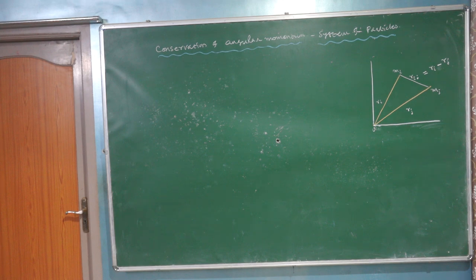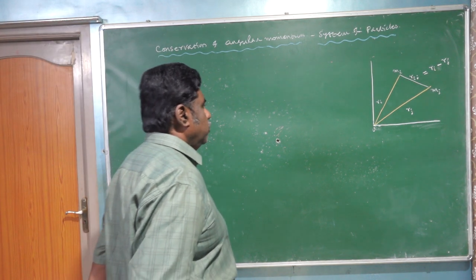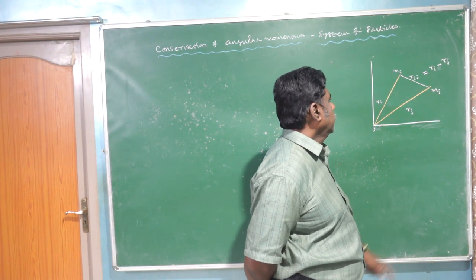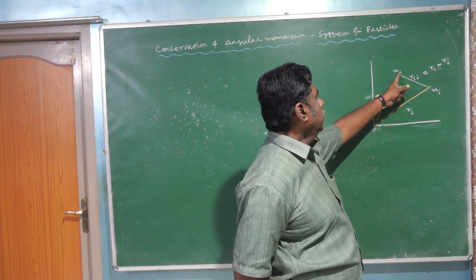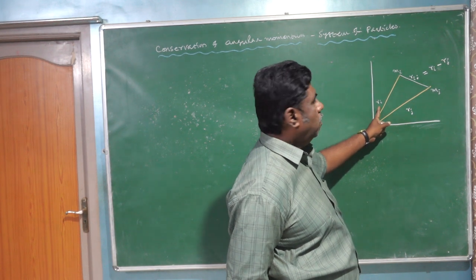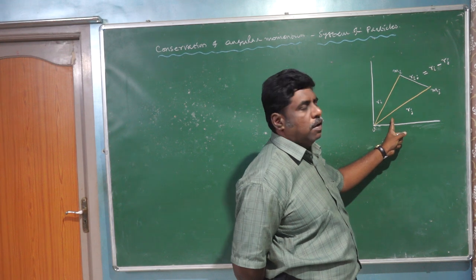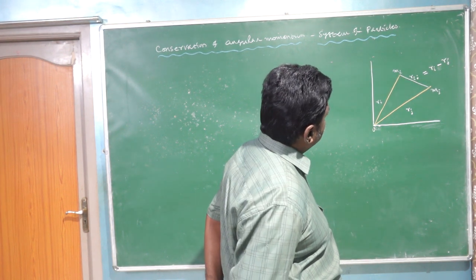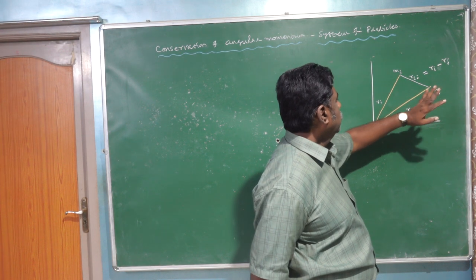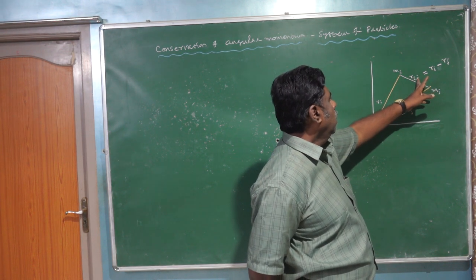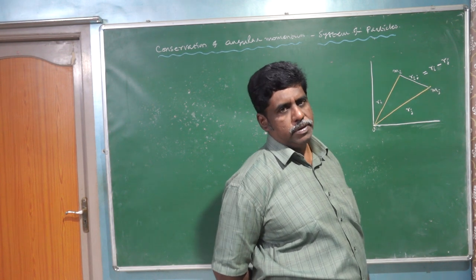In this video lecture, we are going to talk about consideration of angular momentum for a system of particles. Consider a system of n number of particles. Here the i-th particle is positioned at a distance r_i from the origin, and the j-th particle is at a distance r_j from the origin. The distance between these two is given by r_ij equal to r_i minus r_j.